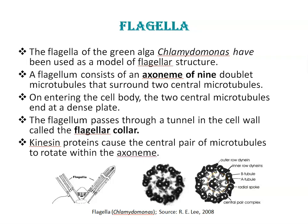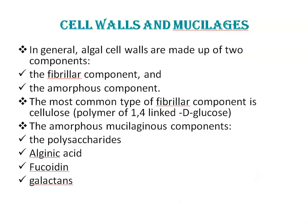There are also other structures between the microtubules and the basal region of the flagellum, like basal bodies. In general, algal cell walls are made up of two components: the fibrillar component, which forms the skeleton of the wall, and the amorphous component, which forms the matrix within which the fibrillar component is embedded.